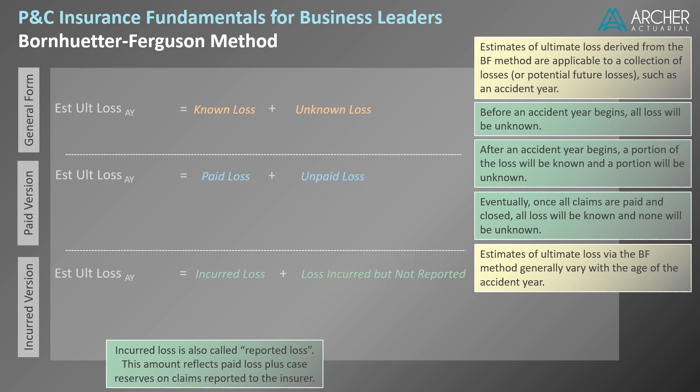Next, we're going to look at the paid version a little bit more closely. Paid loss and unpaid loss corresponds to known loss and unknown loss, but a more familiar way to phrase this is paid loss plus an estimate of loss reserves, because estimated loss reserves is just another way of saying unpaid loss. On the incurred side, it's incurred loss plus IBNR, because IBNR is just another way to say that losses have been incurred but not yet reported. We're going to stick with these naming conventions to keep it more familiar.